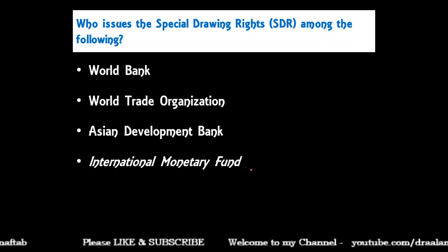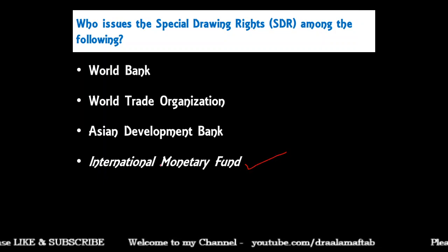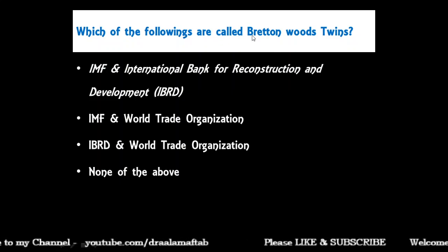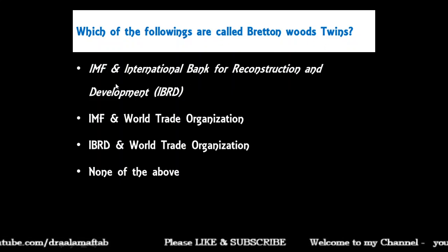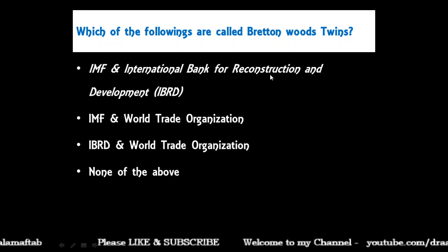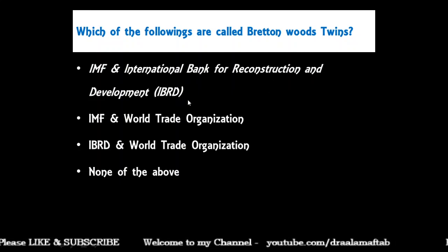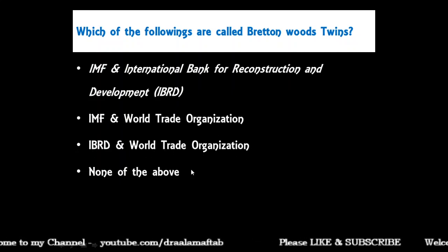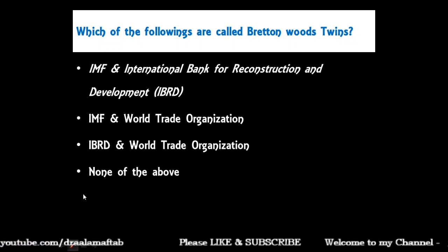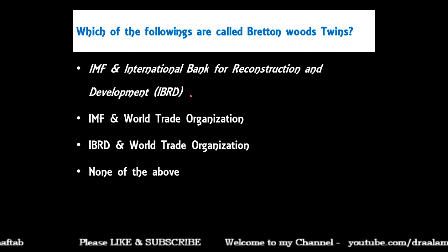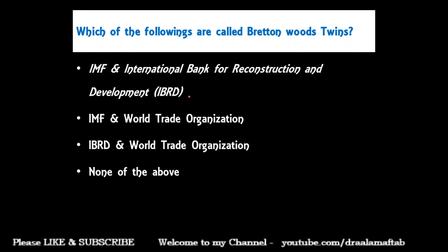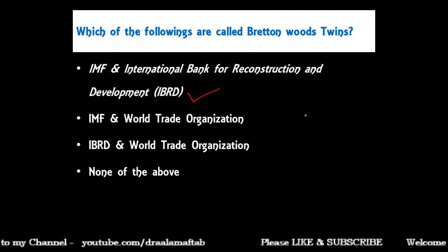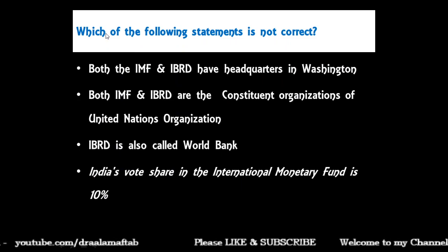Next: who issues Special Drawing Rights (SDR) — World Bank, WTO, Asian Development Bank, or IMF? The International Monetary Fund is the correct answer — the IMF issues SDRs. Which of the following are called the Bretton Woods twins? IMF and IBRD (International Bank for Reconstruction and Development) are called the Bretton Woods twins, established at the Bretton Woods conference in 1945–46.